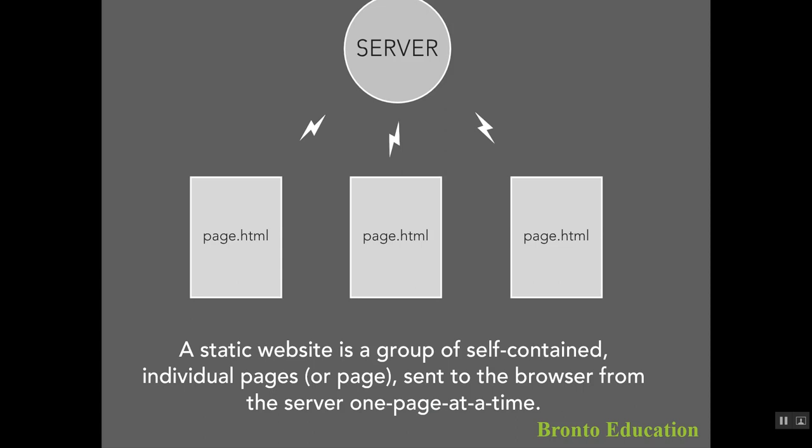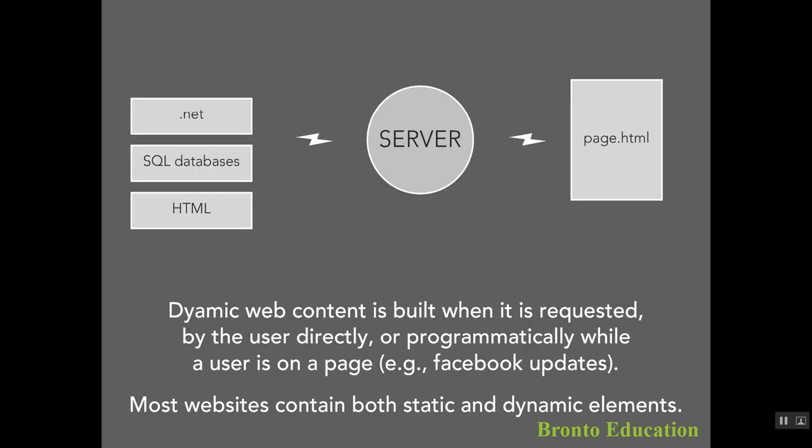A static website is a group of self-contained individual pages sent to the browser from the server, one page at a time. When it comes to .NET and SQL databases combined with HTML, this makes a dynamic website. For example, Facebook is a dynamic website because you need to log in, press the like button, share, or comment — you need an account. Dynamic web content is built when it is requested by the user directly or programmatically while a user is on a page.